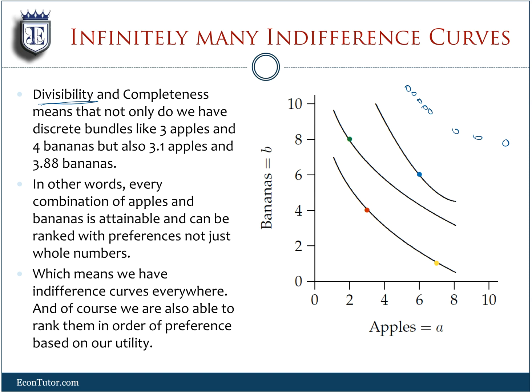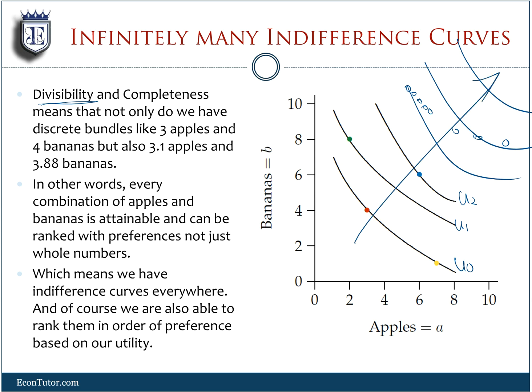Every possible combination can be ranked with preferences — not just whole numbers — which means we have indifference curves everywhere. We're also able to rank them in order of preference based on utility: U1, U2, and so on. The higher indifference curve is going to be better, so we keep going northeast, and that's the direction in which our utility improves.